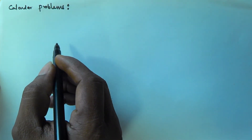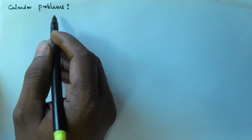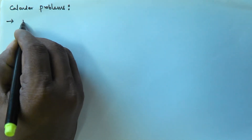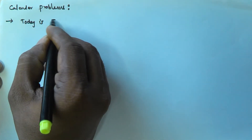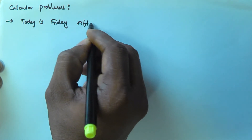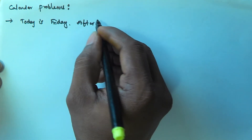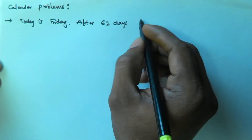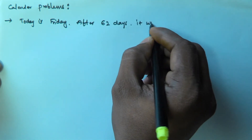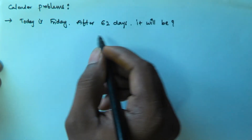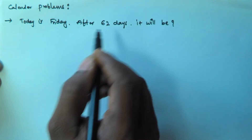Hello friends, in this video we will see a problem related to the calendar topic. The first problem is: today is Friday, so after 62 days it will be which weekday? We have to find the weekday after 62 days if today is Friday.